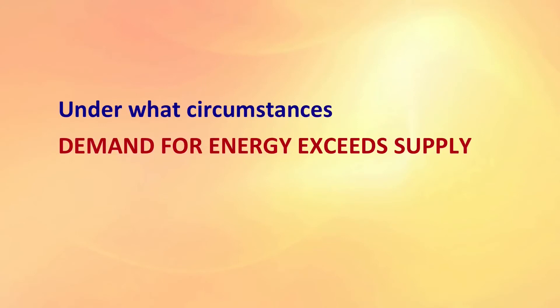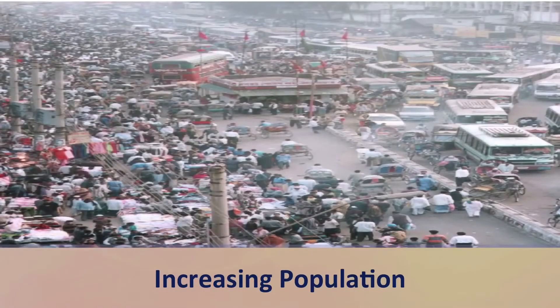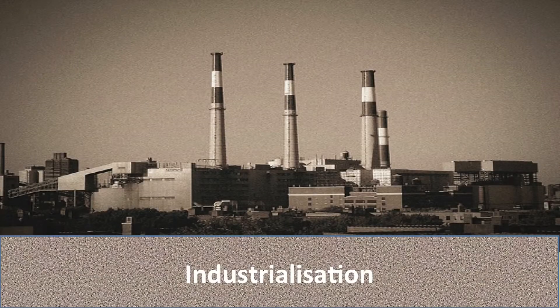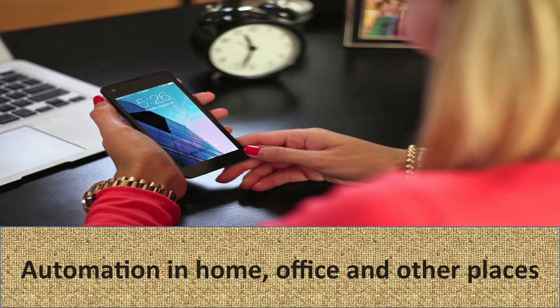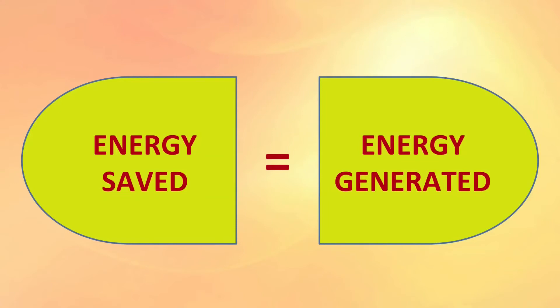Under what circumstances does demand exceed energy supply? In circumstances like increasing population, industrialization, traffic on the road, and automation in homes, offices, and other places. Whenever automation increases, there is energy use. Industrialization is growing, traffic on roads is increasing, and automation in homes, offices, and farms is expanding.